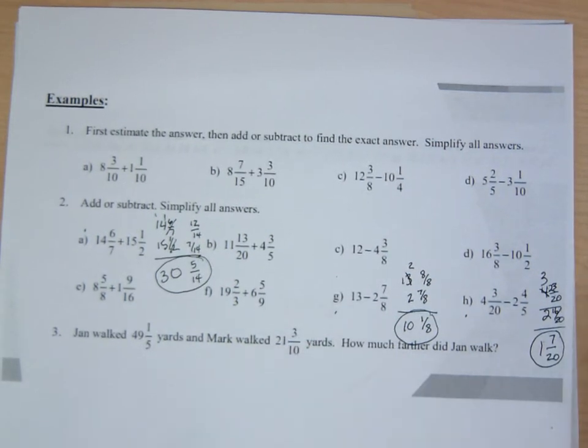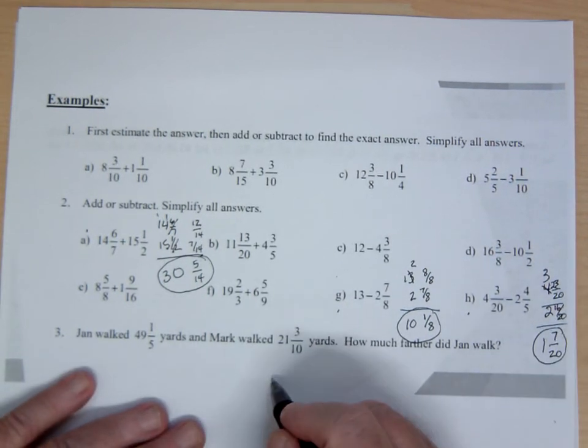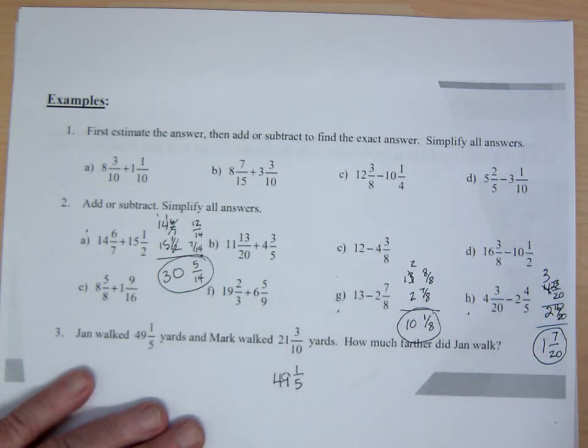Makes that 23 over 20. So 23 over 20 minus 16 over 20 is 7 over 20. And that is 1. So the answer to that is 1 and 7 over 20.